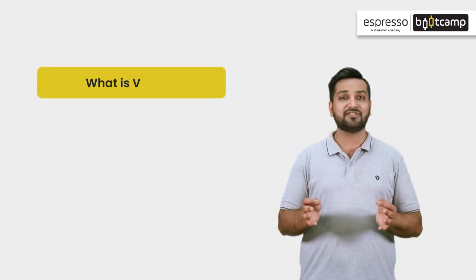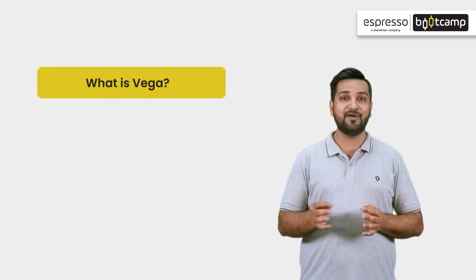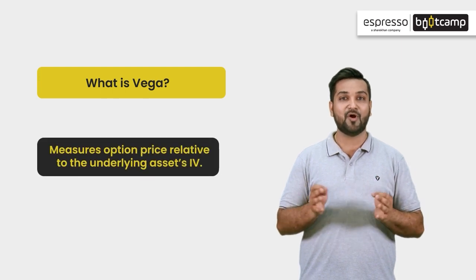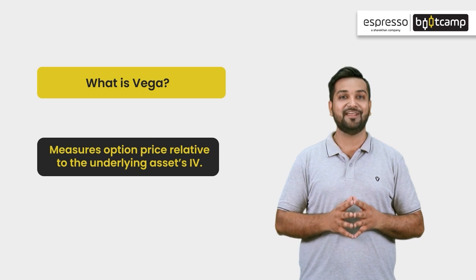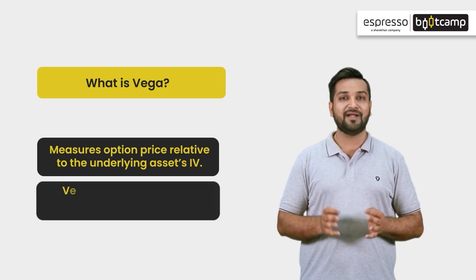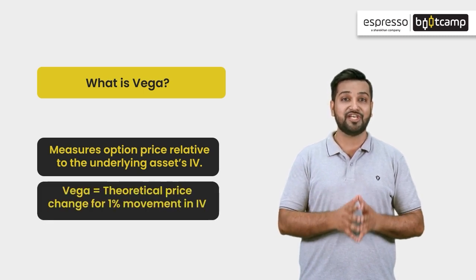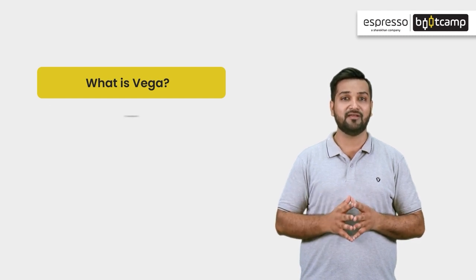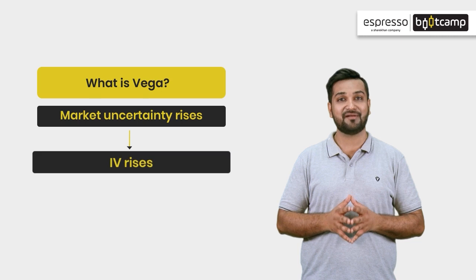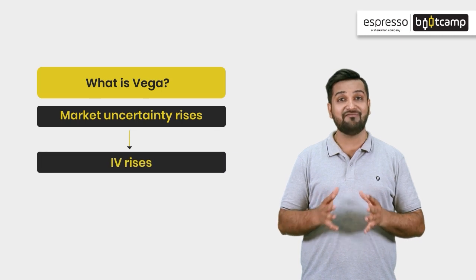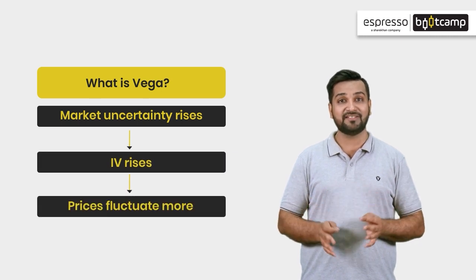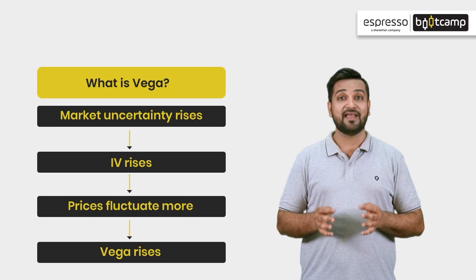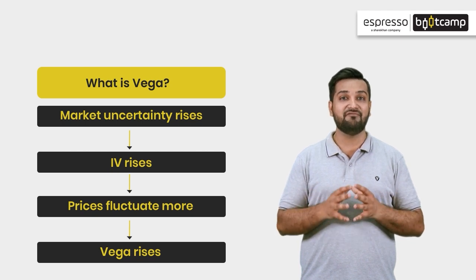Let us now understand what is Vega and how it is connected to implied volatility. Vega measures the value of an option contract on the basis of implied volatility in the underlying asset. Mathematically, Vega measures the change in option price for a 1% move in implied volatility. When uncertainty in the market rises, IV also rises. When IV rises, price fluctuations rise, and that leads to a rise in Vega.